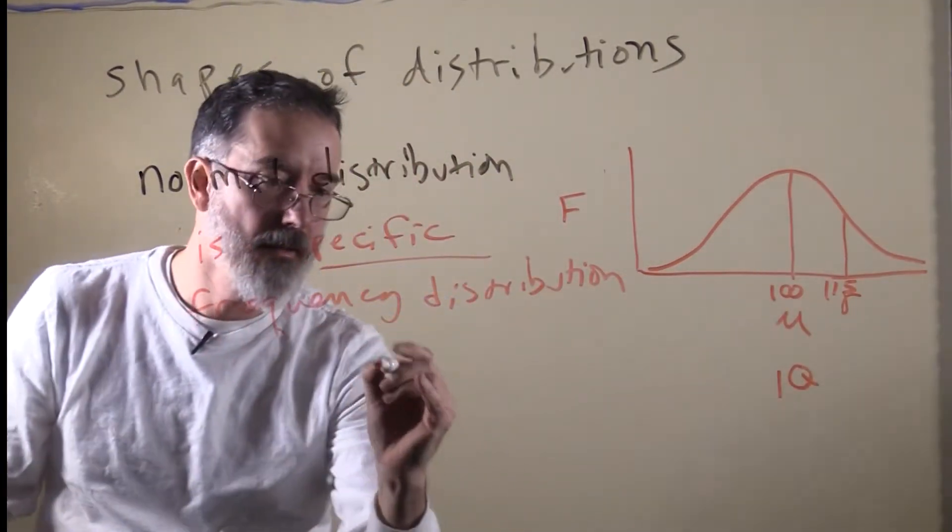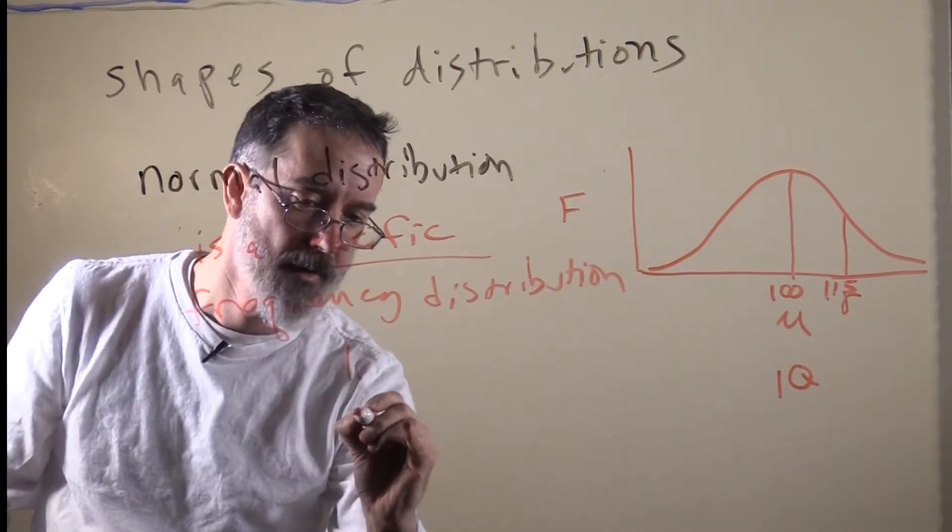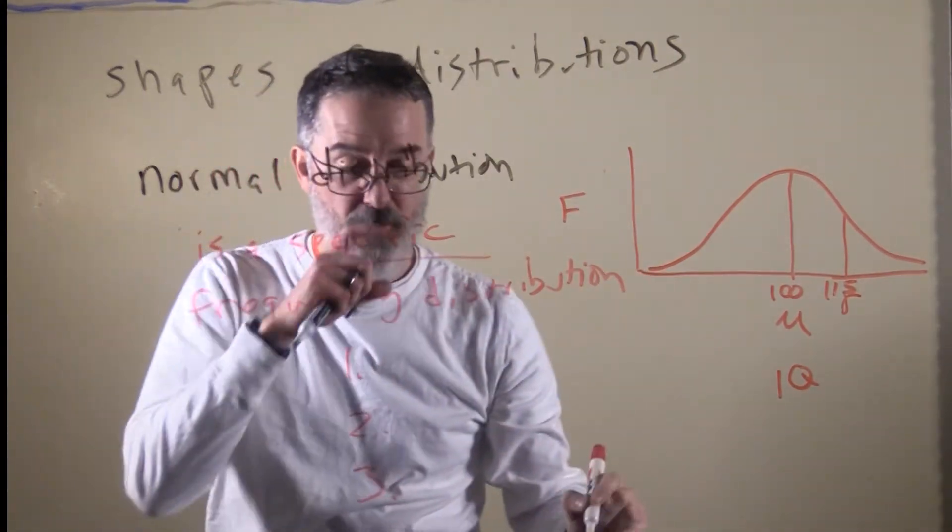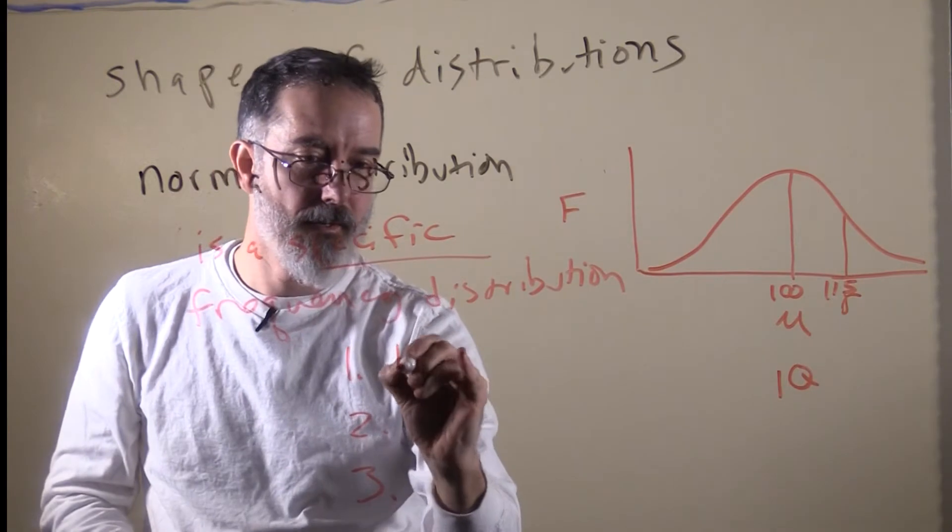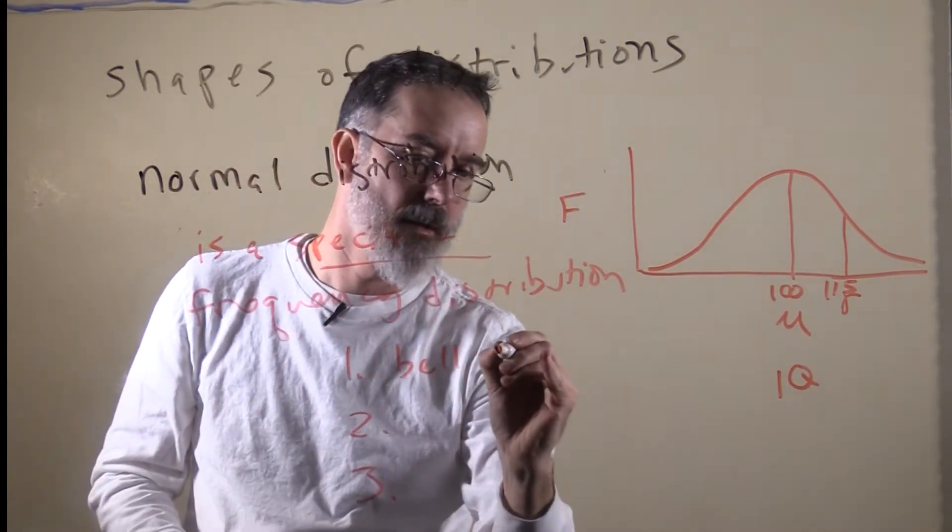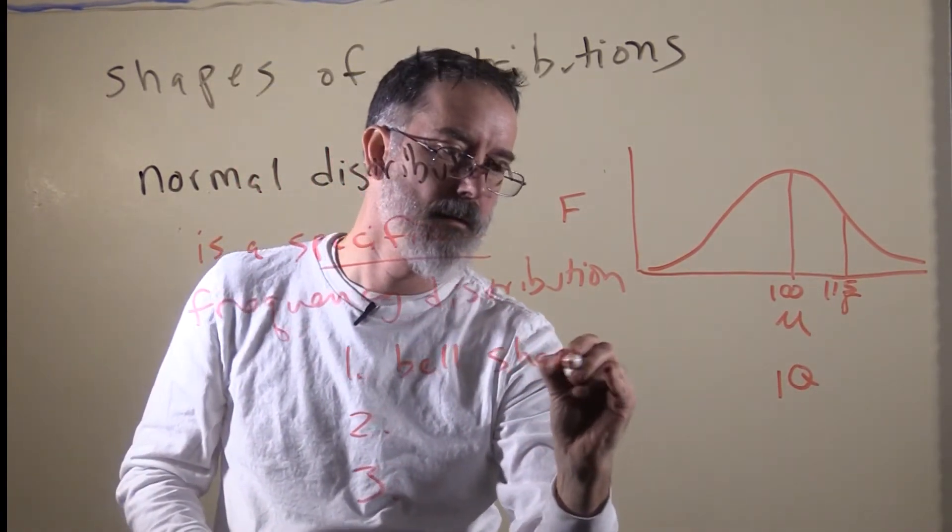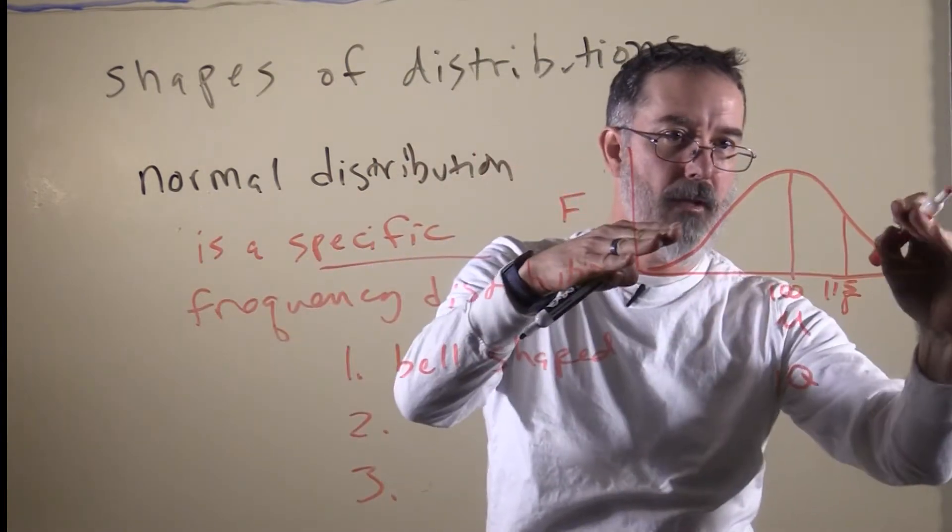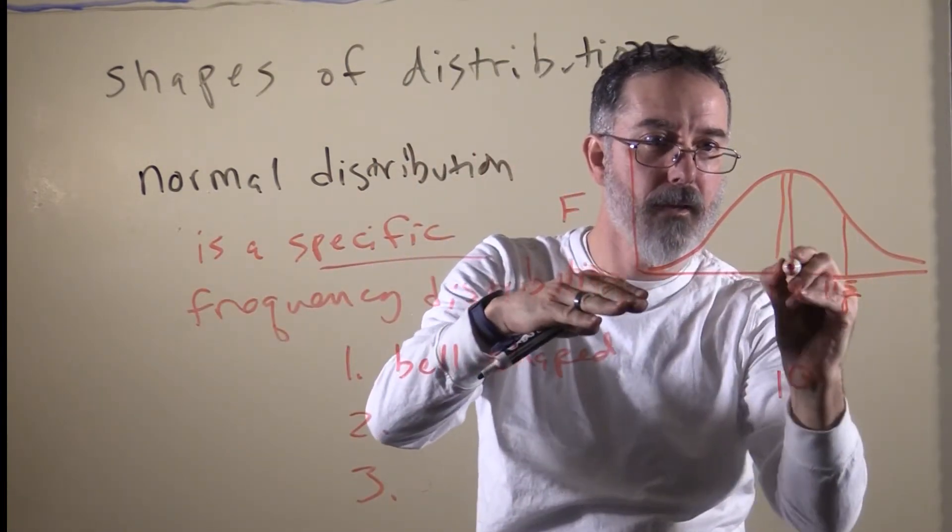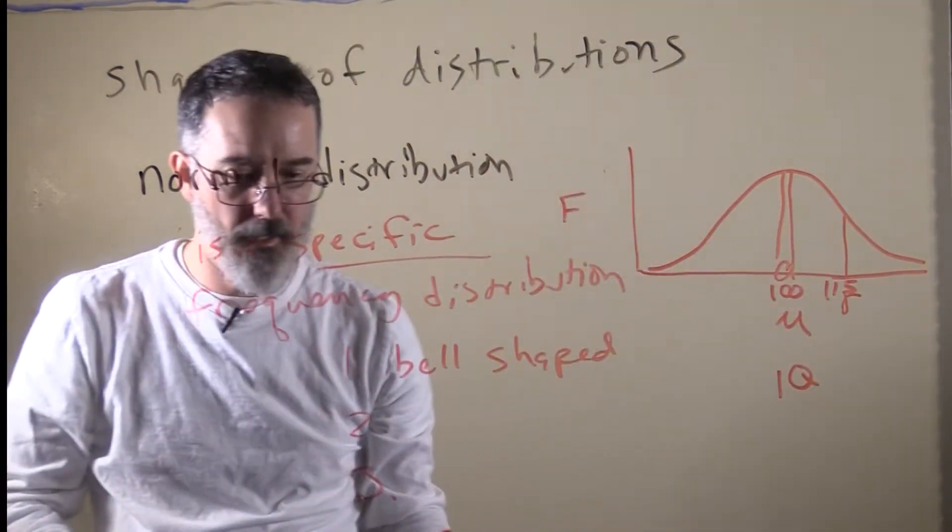The normal distribution has, in addition to an exact shape, three notable characteristics. One is that it is bell-shaped. So it kind of looks like a bell. You can imagine maybe the little thing hanging down that goes ding, ding, ding inside there.